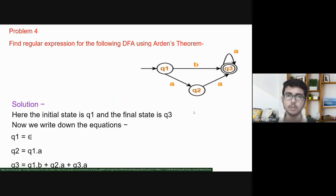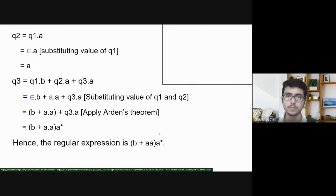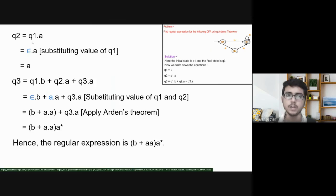There is one more problem. We have to find the regular expression for this DFA. Here, the initial state is Q1 and the final state is Q3. We can see there is no incoming edge into Q1, so the equation of Q1 is ε. For Q2, there is only one incoming edge from Q1 with input alphabet A, so Q2 = Q1·A. For Q3: Q3 = Q1·B + Q2·A + Q3·A. We solve these: substituting Q1 = ε gives Q2 = A. Substituting Q1 and Q2 into Q3's equation, this is in the form of Arden's theorem. We apply Arden's theorem and get the final regular expression.